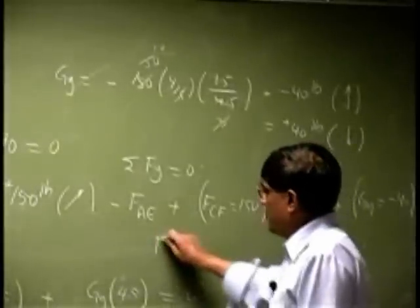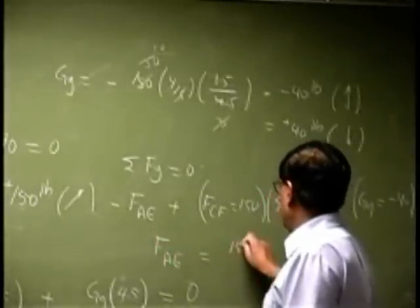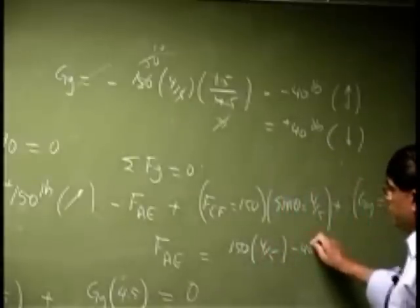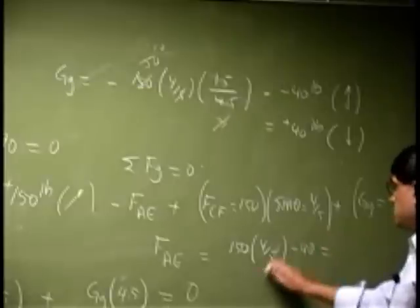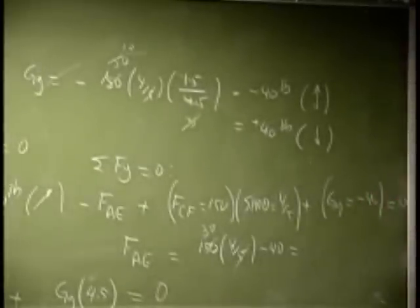So we get Fae as 150, 4 fifth minus 40. So that is 30. So it must be 120 minus 40. That is 80 pounds positive, which means it will keep going down.